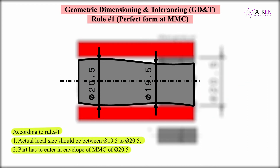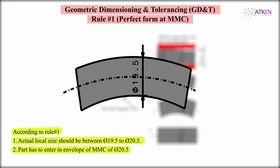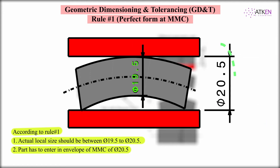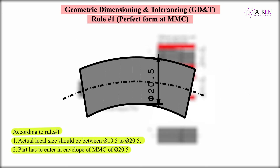For the second case, at every cross section the actual local size is at LMC and is within the range, and it also enters the envelope of diameter 20.5, so it also follows Rule 1.